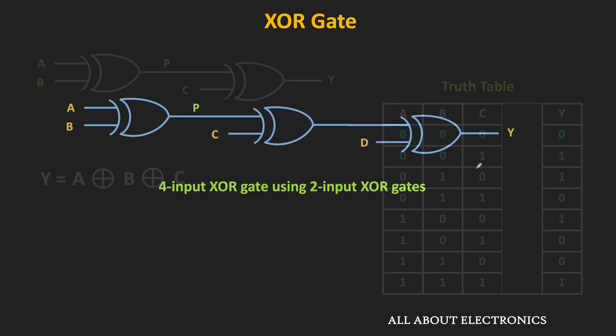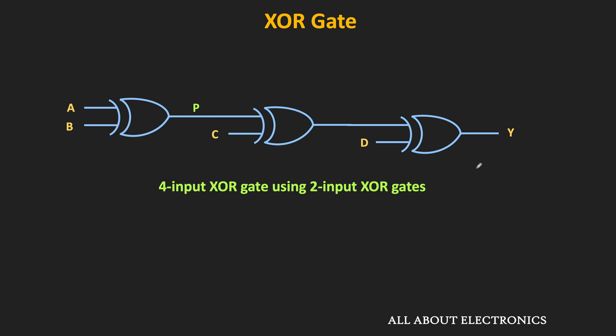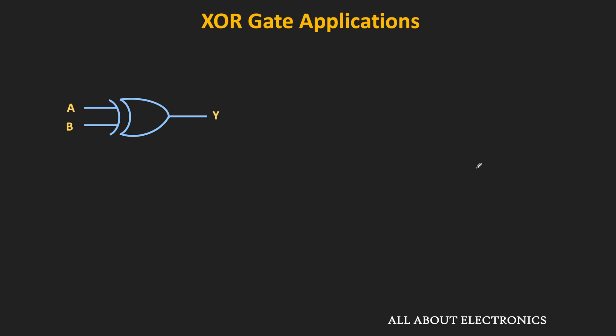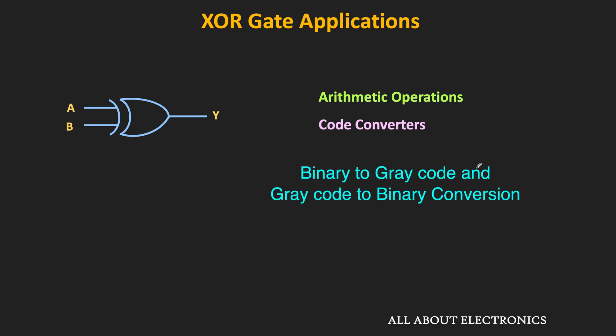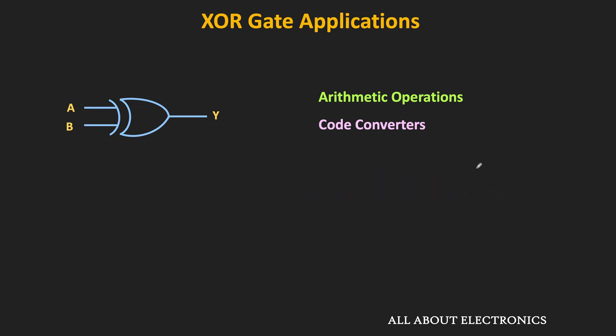This is how we can implement the four-input XOR gate using two-input XOR gates. These XOR gates are used in a wide range of applications — for example, to perform arithmetic operations they are used in adder and subtractor circuits. Moreover, they are also used in code converter circuits, such as binary to Gray code and Gray code to binary conversion. They are also used in error detection and error correction circuits. In upcoming videos, we will learn about all these different circuits in detail.